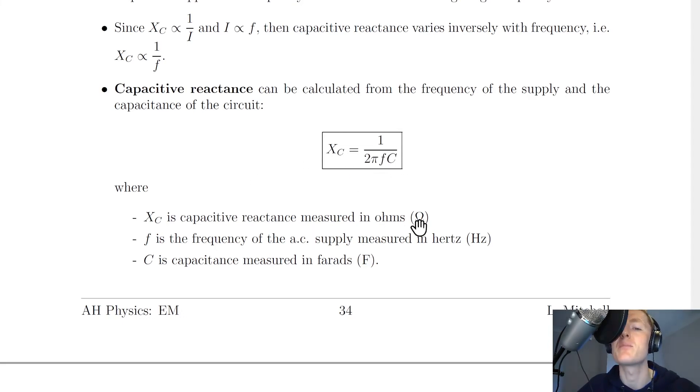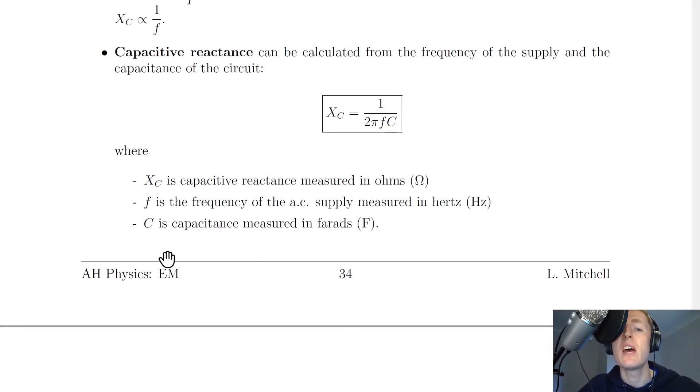Where XC is the capacitive reactance measured in ohms, F is the frequency of the AC supply measured in hertz, and C is the capacitance measured in farads.